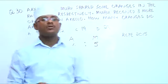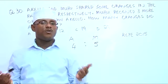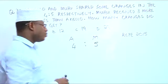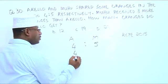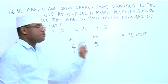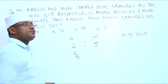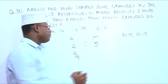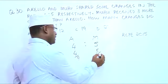If you want to know the fraction of oranges which Akelo got, it will be 4 over the total. The total is 4 plus 5, which is 9. The fraction for Muhu will be 5 over the total — 4 plus 5 — which is 9.